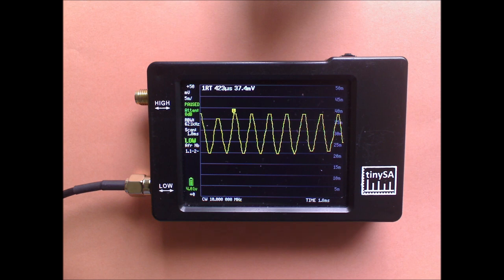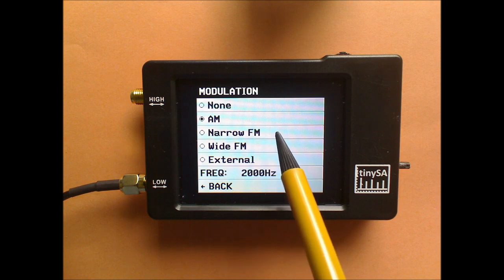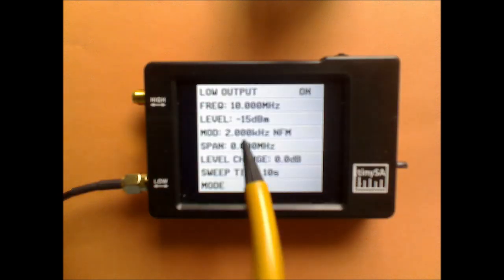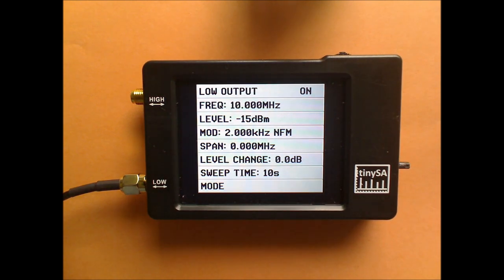And that concludes the analysis of the AM modulation. In the next part, we will look at the FM modulation. To do that, we switch the source TinySA, the signal generator TinySA to narrow FM 2 kHz. And the rest of the settings we keep the same.